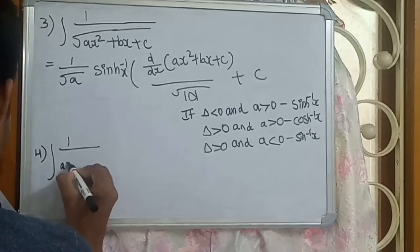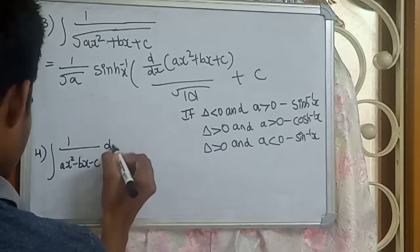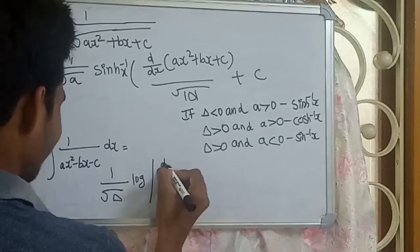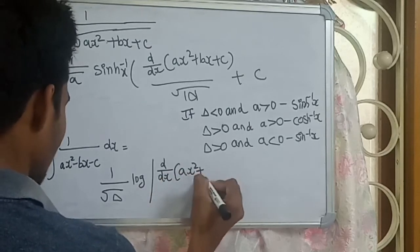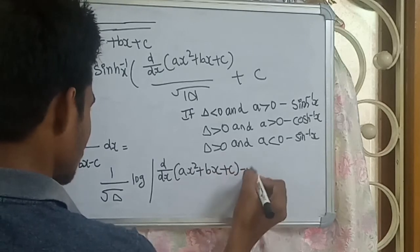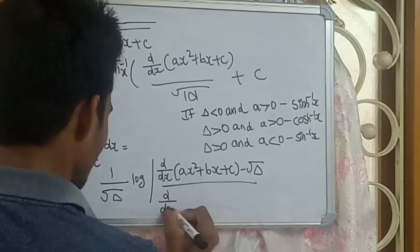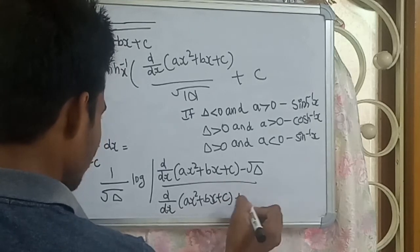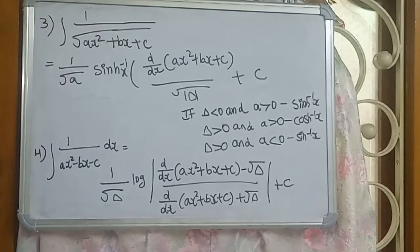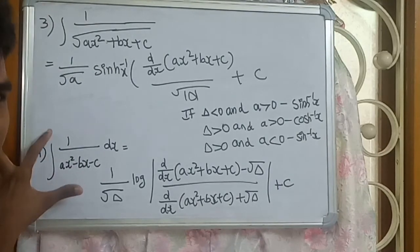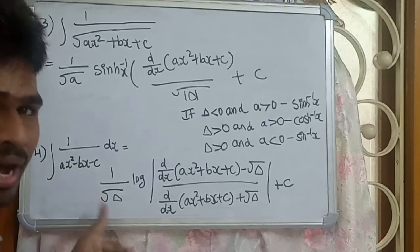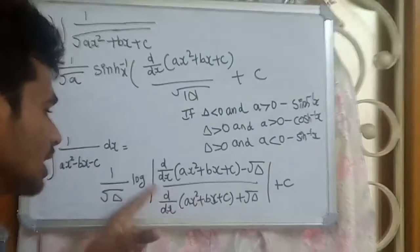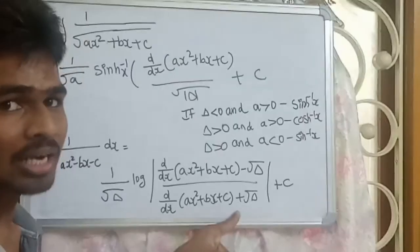Fourth formula: integration of 1 by Ax squared minus Bx minus C dx equals 1 by root delta times log of d/dx of Ax squared plus Bx plus C minus root delta, divided by d/dx of Ax squared plus Bx plus C plus root delta, plus C.